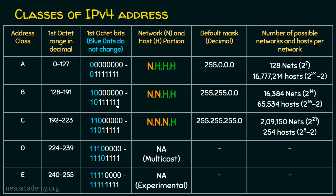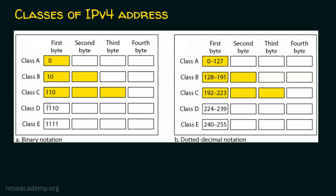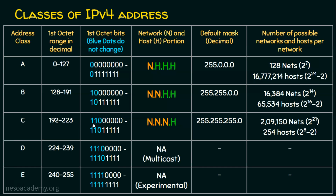For Class C, the first three bits are fixed as 1,1,0, leaving five bits remaining. The starting value with five zeros gives 192 in decimal, and the ending with five ones gives 223 in decimal. So Class C ranges from 192 to 223 in the first octet.